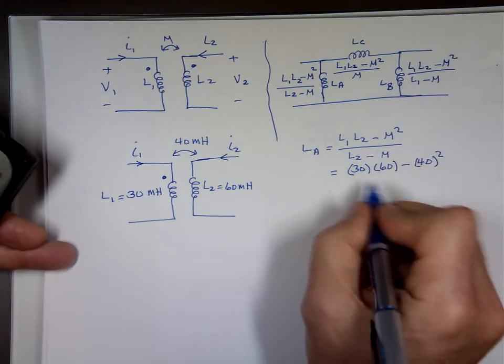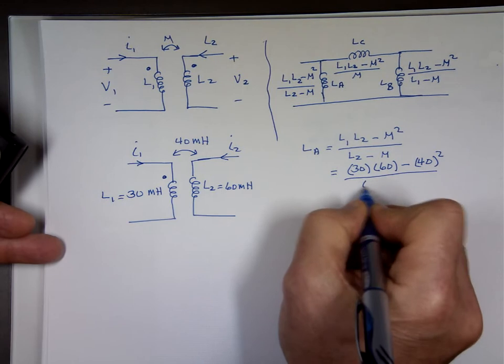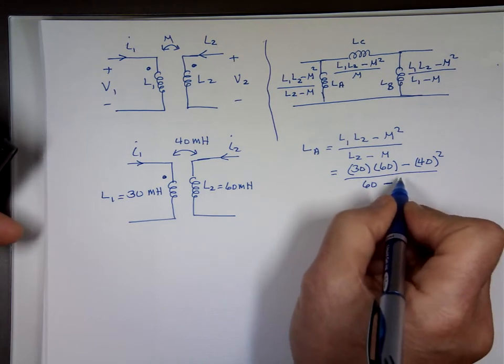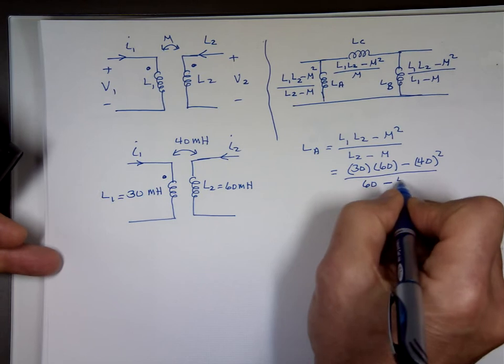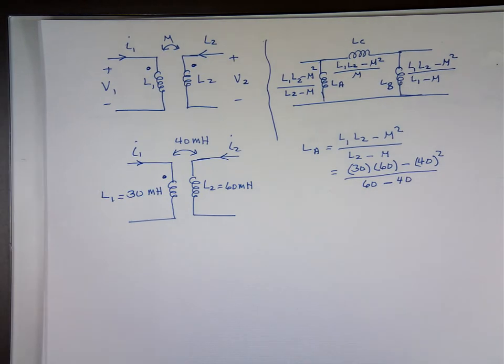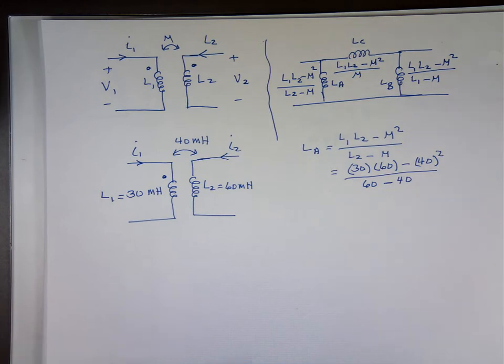Remember, those will be millihenry squared on the top, but in the bottom will be millihenry. So it's 60 minus 40 minus m. So let's see what this one is equal to. There's my calculator. That gives 200 millihenry squared. And we divide that by 60 minus 40, which is 20. I end up with 10 millihenry.